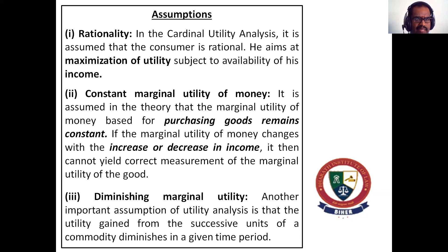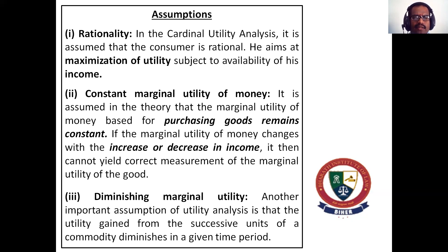Assumption two: Constant marginal utility of money. It is assumed that the marginal utility of money used for purchasing goods remains constant. If the marginal utility of money changes with an increase or decrease in income, income is the vital factor for purchasing goods and services — it will increase or decrease utility accordingly. Then it cannot yield a correct measure of the marginal utility of goods.